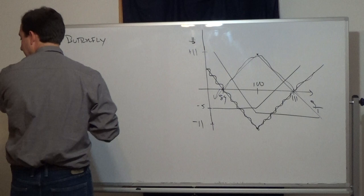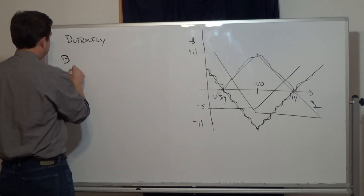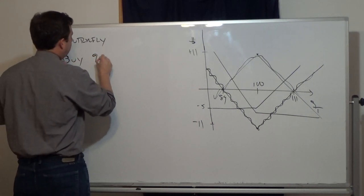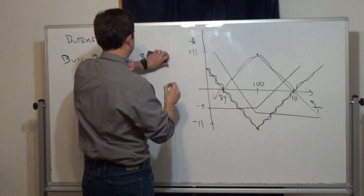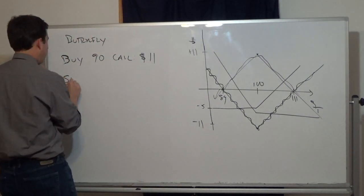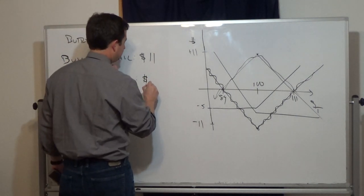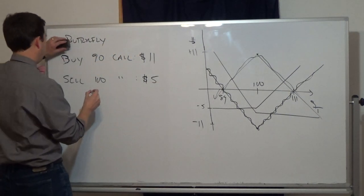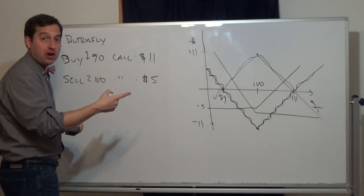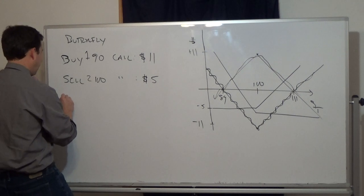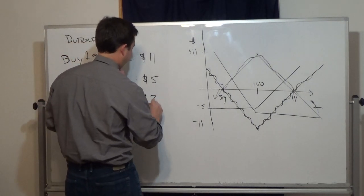A butterfly is important for understanding the relationships of option prices at different strikes. We have 90, 100, and 110 strike prices. We buy one 90-strike call for $11, sell two 100-strike calls at $5 each (earning $10 total), and buy one 110-strike call for $2. So we pay $13 and earn $10, meaning this spread costs us $3 net.